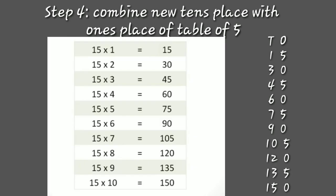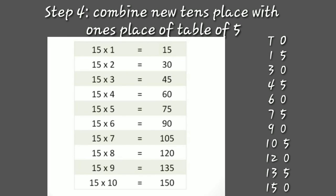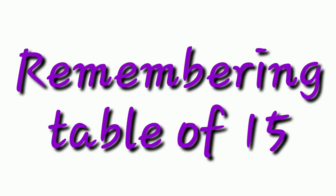Yes, let us verify: 15 ones are 15, 15 twos are 30, 15 threes are 45, 15 fours are 60, 15 fives are 75, 15 sixes are 90, 15 sevens are 105, 15 eights are 120, 15 nines are 135, and 15 tens are 150. That was the method of writing the table of 15. Now you also need to remember the table of 15 for the dodging table, following the same steps as we used for the two-digit number tables like 12, 13, and 14.